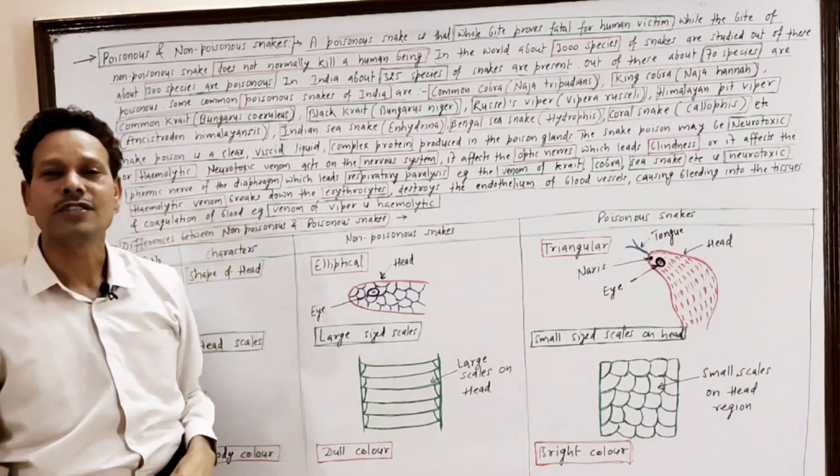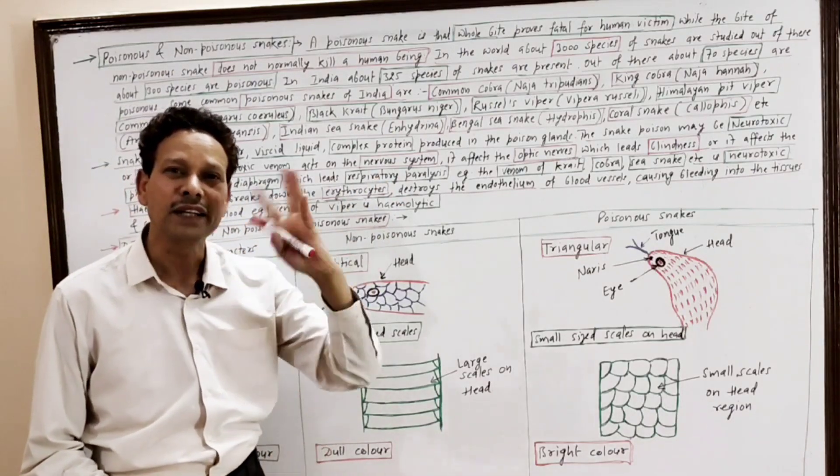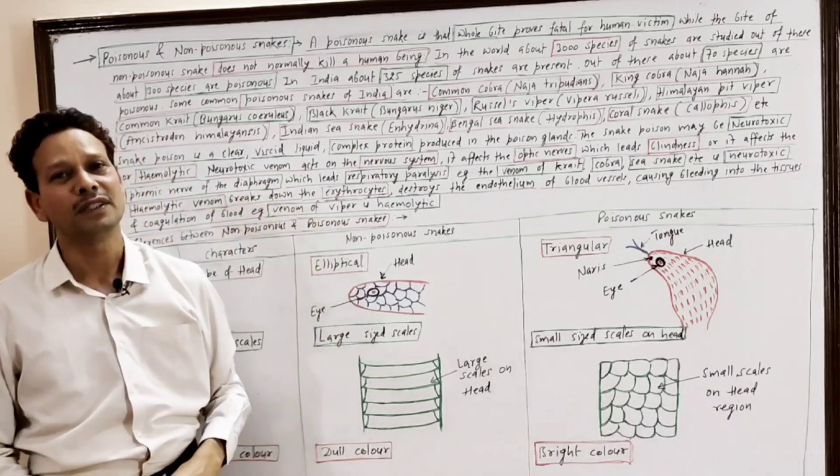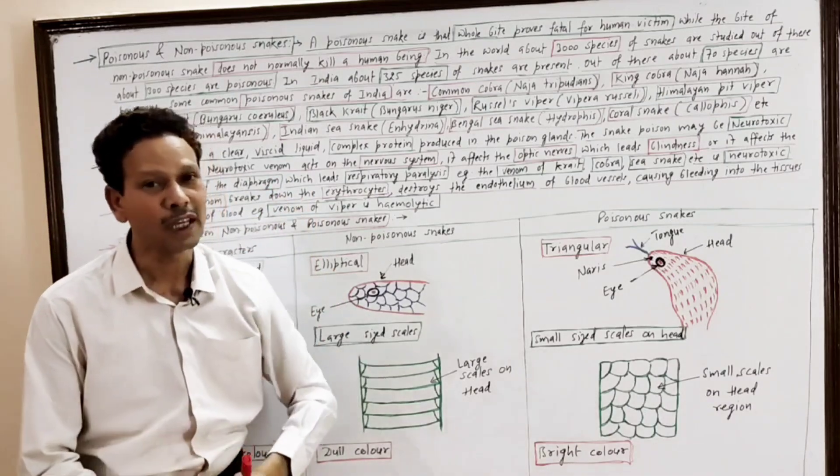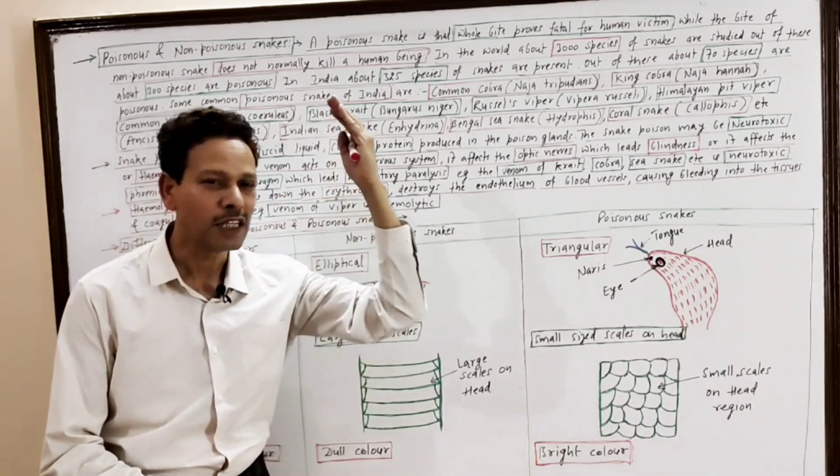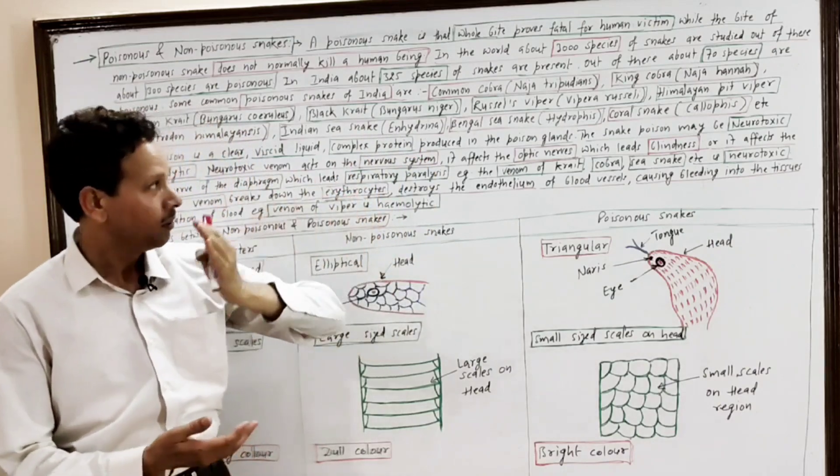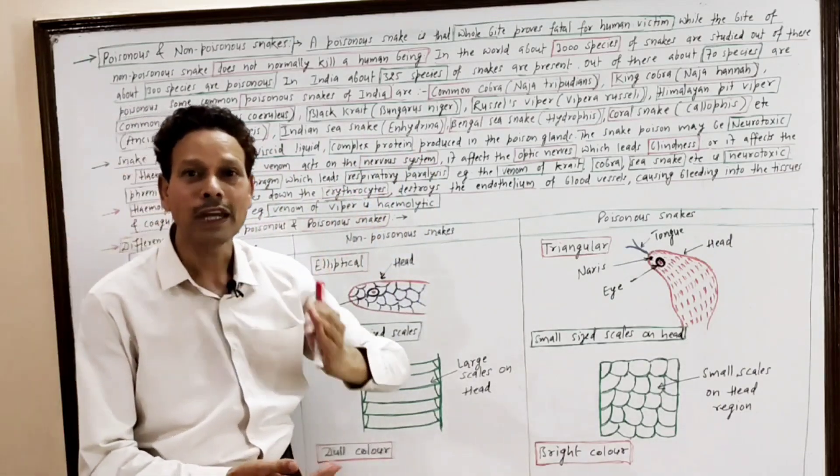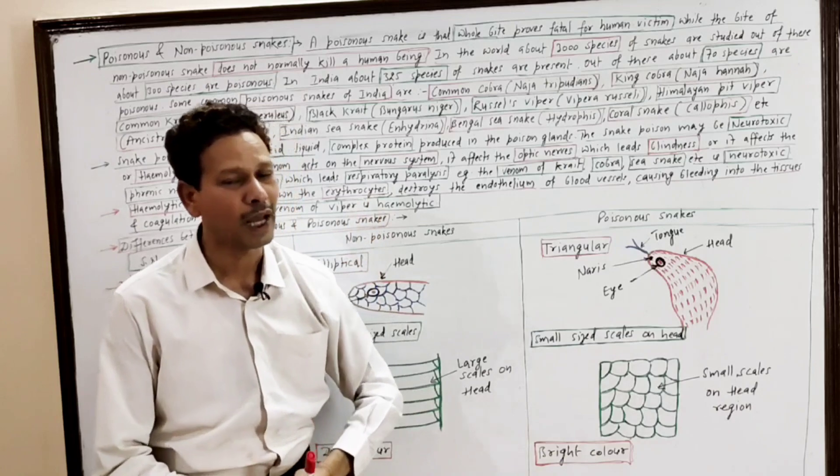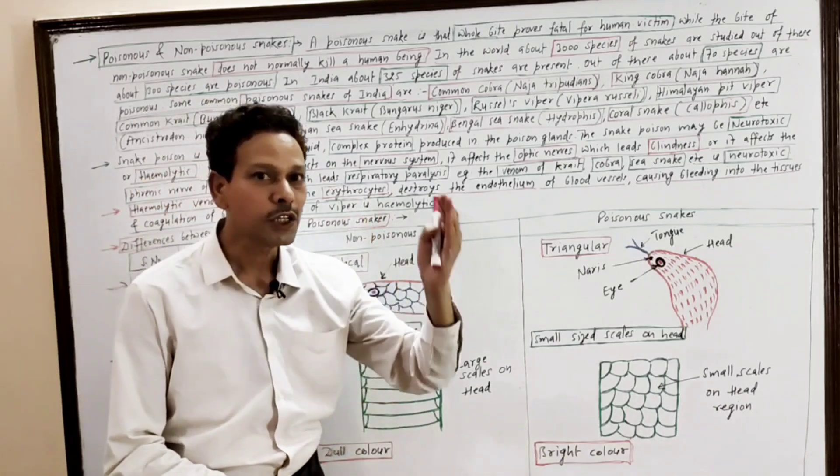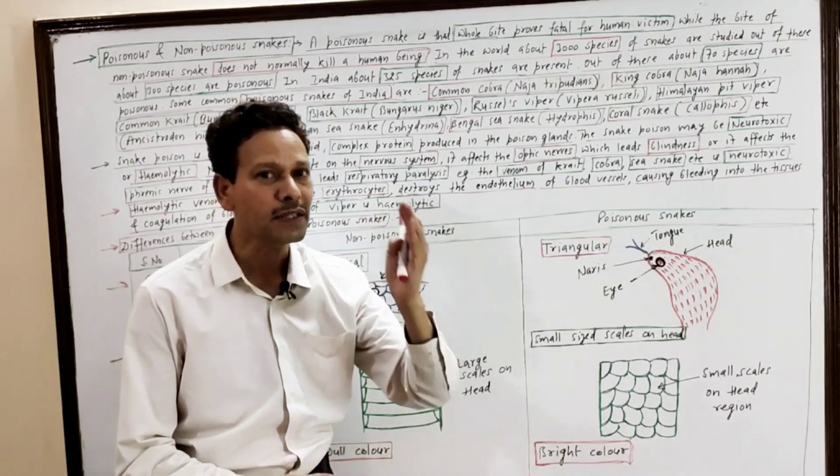Snake poison, or venom, is a clear acidic fluid which is a complex protein. Note down, competitive exam students: the poison or venom of snakes is of two types - neurotoxic and hemolytic.